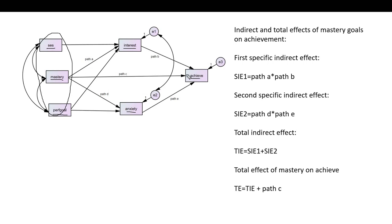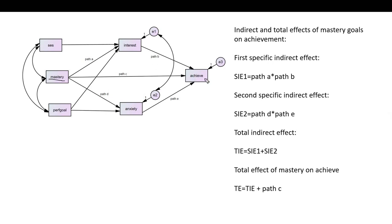The remaining three variables are endogenous — they are being predicted by other variables within the model. What I've done is broken this out into different effects, and we're going to mainly focus on the effect of mastery goals on achievement. I've labeled various paths to demonstrate these different kinds of effects.